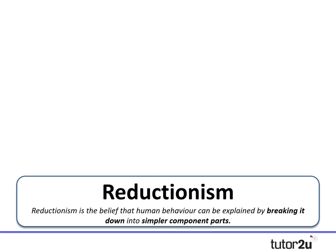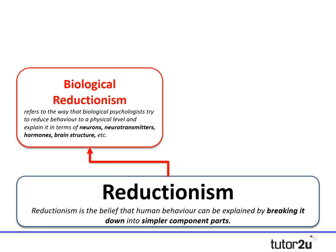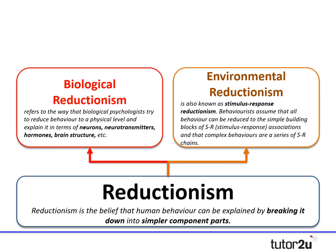You also need to be aware of two key terms within the reductionism debate. The first is biological reductionism, which refers to the way biological psychologists try to reduce behaviour to a physical level and explain it in terms of neurons, neurotransmitters, hormones, brain structure, etc. The other is environmental reductionism — sometimes called stimulus-response reductionism — where behaviourist psychologists argue that behaviour can be reduced down to simple building blocks of stimulus-response associations, and that even complex behaviour is just a series of such associations.